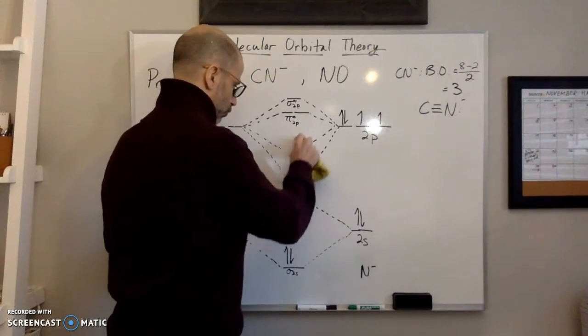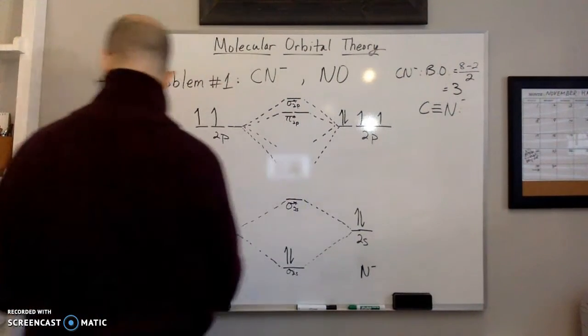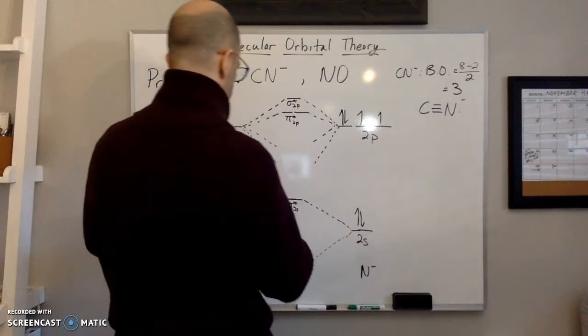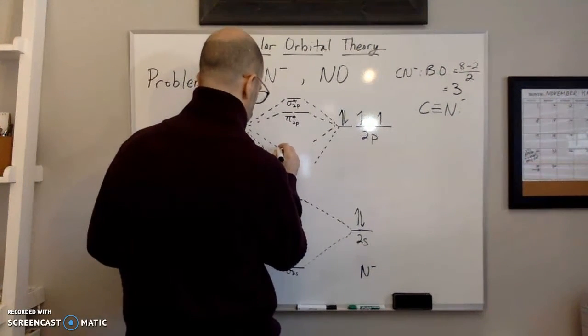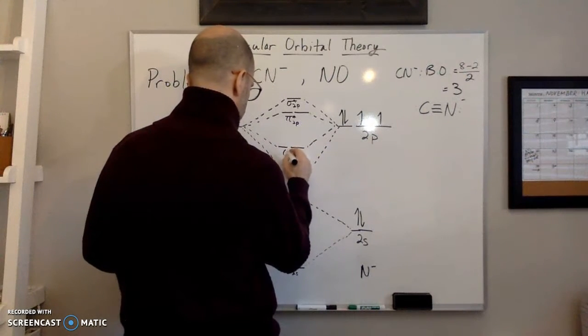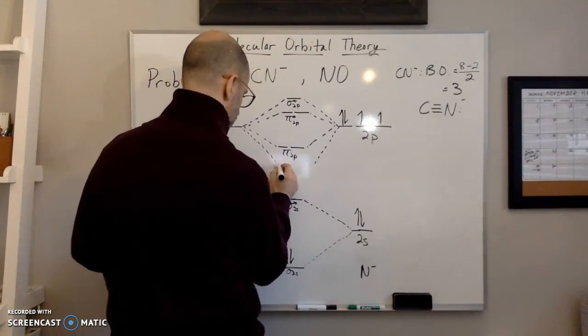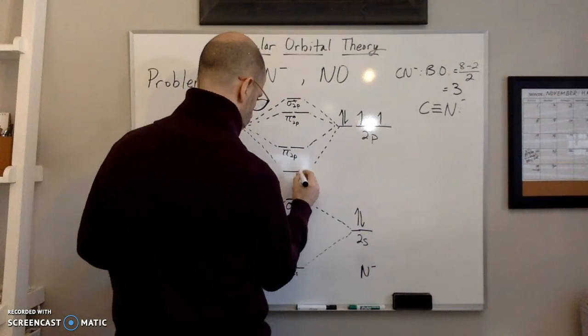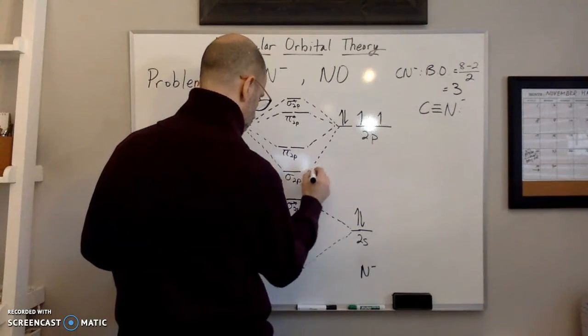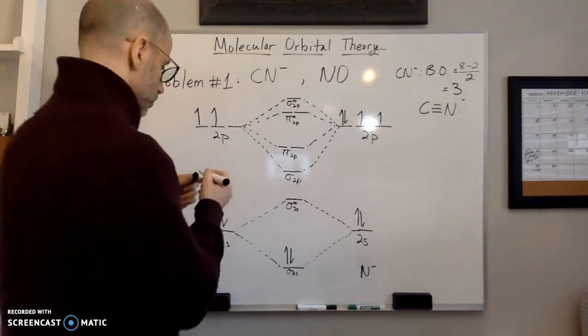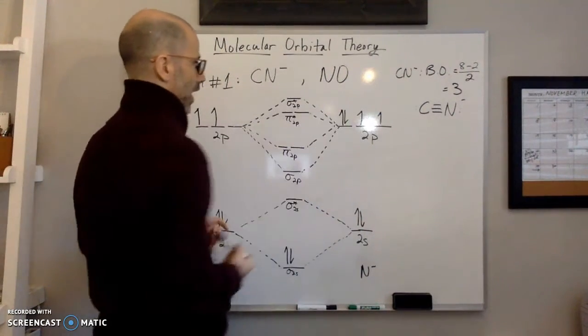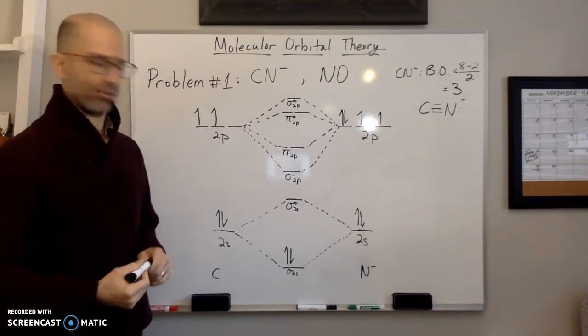So if we change this, so now instead of having the sigma 2p there, we're going to have the pi 2p here. And then below here, we'll have the sigma 2p. So this is the order of this orbital diagram for NO. So now we can do NO.